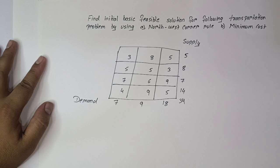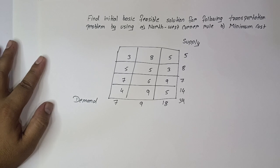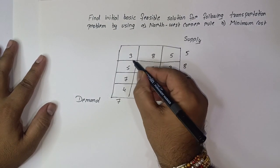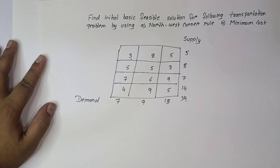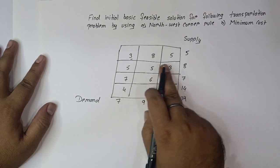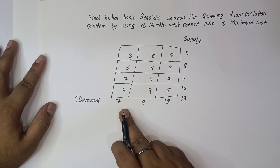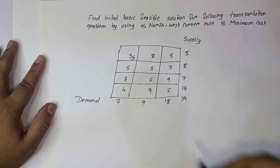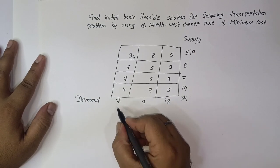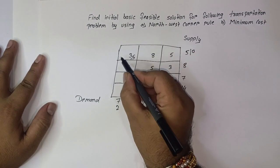Now let's solve this transportation problem using the North West Corner Rule. To apply this rule, we select the upper-left (northwest) corner cell. Here the upper-left cell has value 3. We allocate the minimum of supply and demand: the first row supply is 5 and the first column demand is 7, so the minimum is 5. We allocate 5 here.